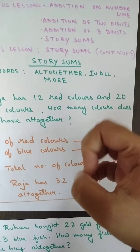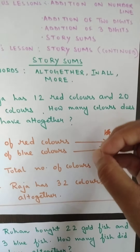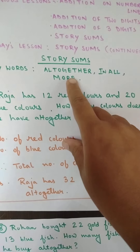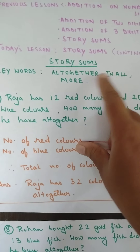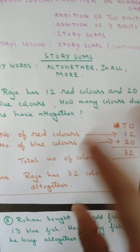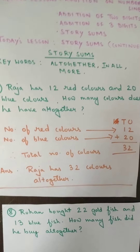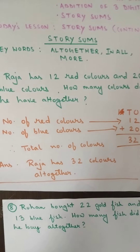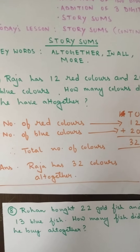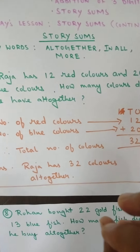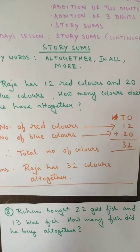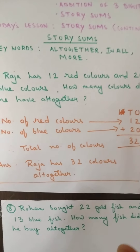Keywords are those important words you can find in addition story sums. These are: all, together, in all, more. These are the words you can find in addition story sums, and these words will help you to understand which are the addition story sums.